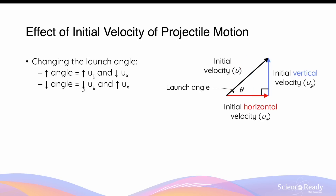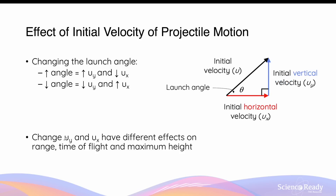Conversely, when we decrease the launch angle, this will decrease the vertical component and increase the horizontal component. This is assuming that the initial velocity, which is the hypotenuse of this vector triangle, remains constant. If we keep the initial vector constant in length but decrease the launch angle, this will result in a smaller vertical component and a larger horizontal component, as you can see here.